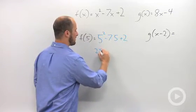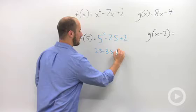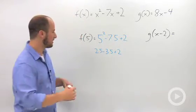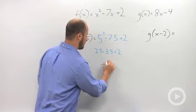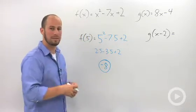This turns out to be 25 minus 35 plus 2. Negative 10 plus 2 is negative 8. Polynomial function, plug it in.